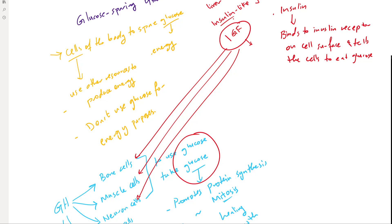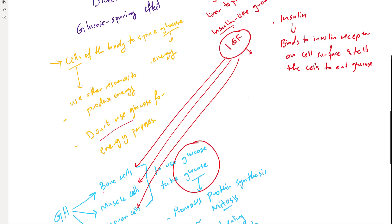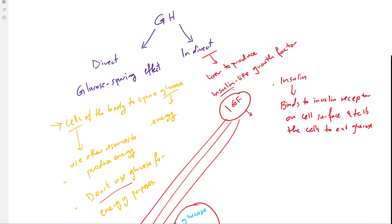Now, the growth hormone asks most cells not to use glucose, but for bone, muscle, and neuron cells, the GH needs them to take up glucose — and it helps them do that by secreting IGF. The IGF will enhance their glucose consumption, the same thing for the muscle cells. So through those two mechanisms, the growth hormone promotes growth, promotes mitosis, and promotes protein synthesis.